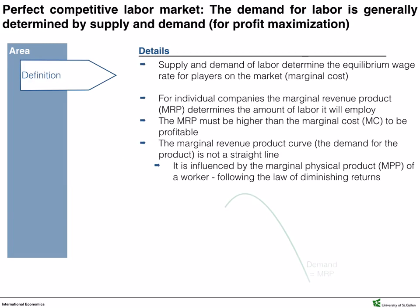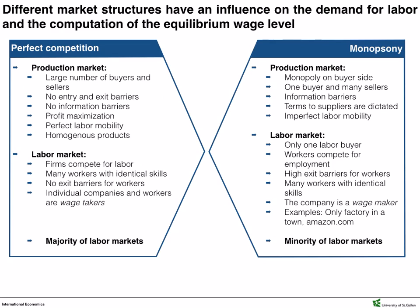Companies want to earn profits. The monetary revenue product, or MRP, determines the quantity of labor a company will need for a given purpose. To be profitable, the MRP must be higher than the cost of the workers. The MRP curve is influenced by two factors: the marginal physical product, or the amount of value each new employee brings following the rule of diminishing returns, and the demand for the product in the market. This makes the MRP curve downward sloping.